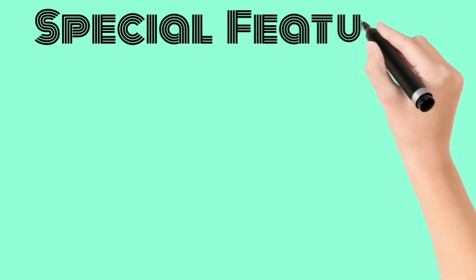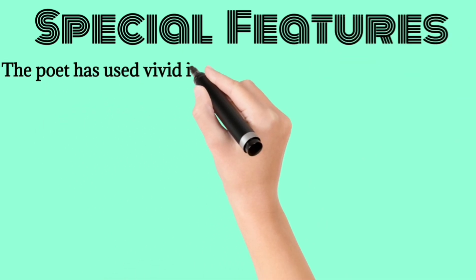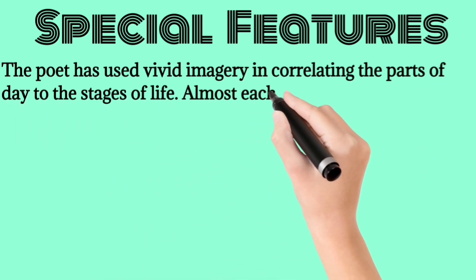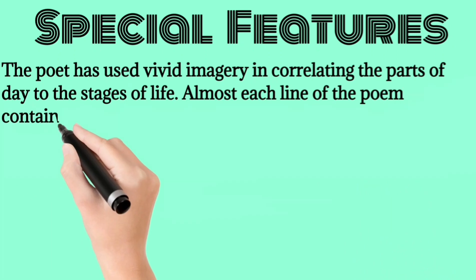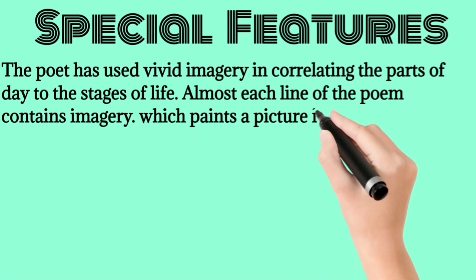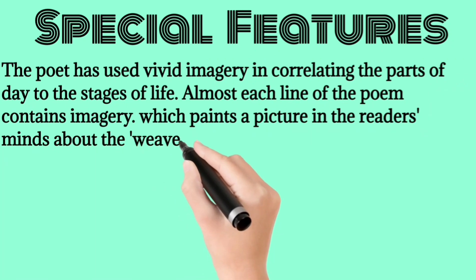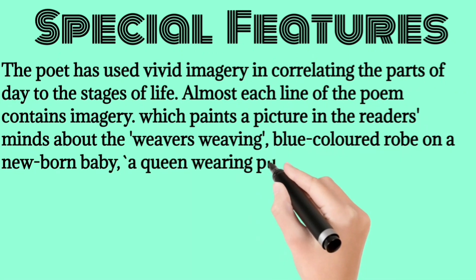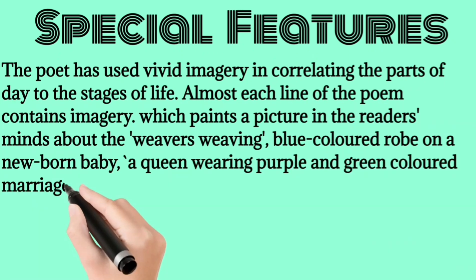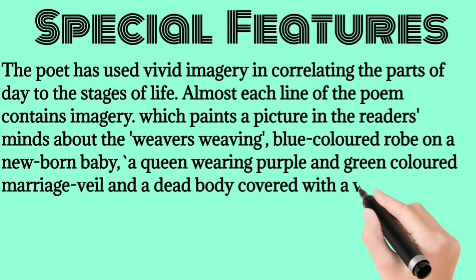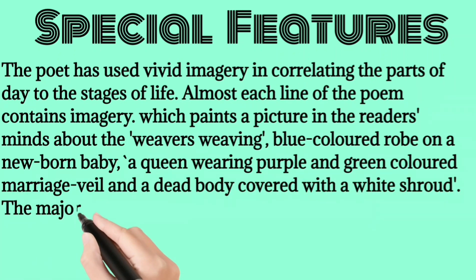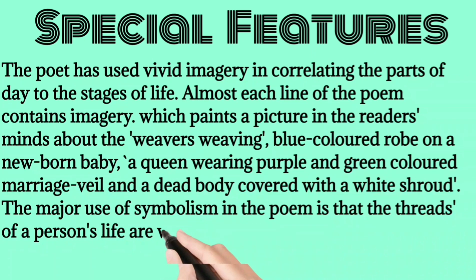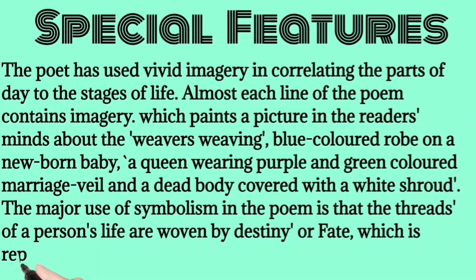Special features: The poet has used vivid imagery in correlating the parts of day to the stages of life. Almost each line contains imagery which paints a picture in the reader's mind — weavers weaving a blue-colored robe for a newborn baby, a queen wearing a purple and green-colored marriage veil, and a dead body covered with a white shroud. The major use of symbolism is that the threads of a person's life are woven by destiny or fate, represented by the weavers in this poem.